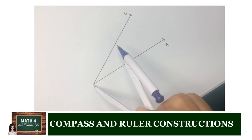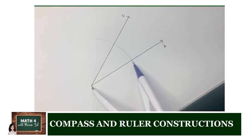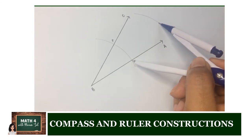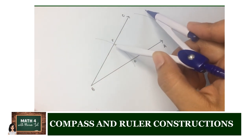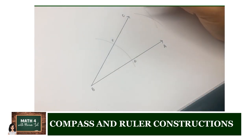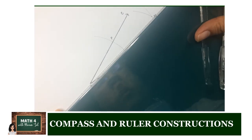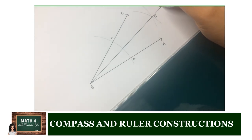We are also going to construct the angle bisector of a given angle. Let's say we have angle ABC. We determine a radius in our compass and draw an arc that will intersect both rays of angle ABC. Let's name those points of intersection F and G. Using the same radius, draw another arc with F and G as centers — what's important is that the radius used for both arcs is the same. We get the point of intersection between those two arcs and name it point N. Lastly, we construct ray BN, which is the angle bisector of angle ABC.